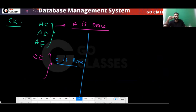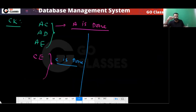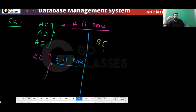A is done, C is done. Now check the remaining pairs. BD cannot determine everything. But BE: BE can determine C, and EC can determine everything — so BE can determine everything. BE is a candidate key. B is now done.